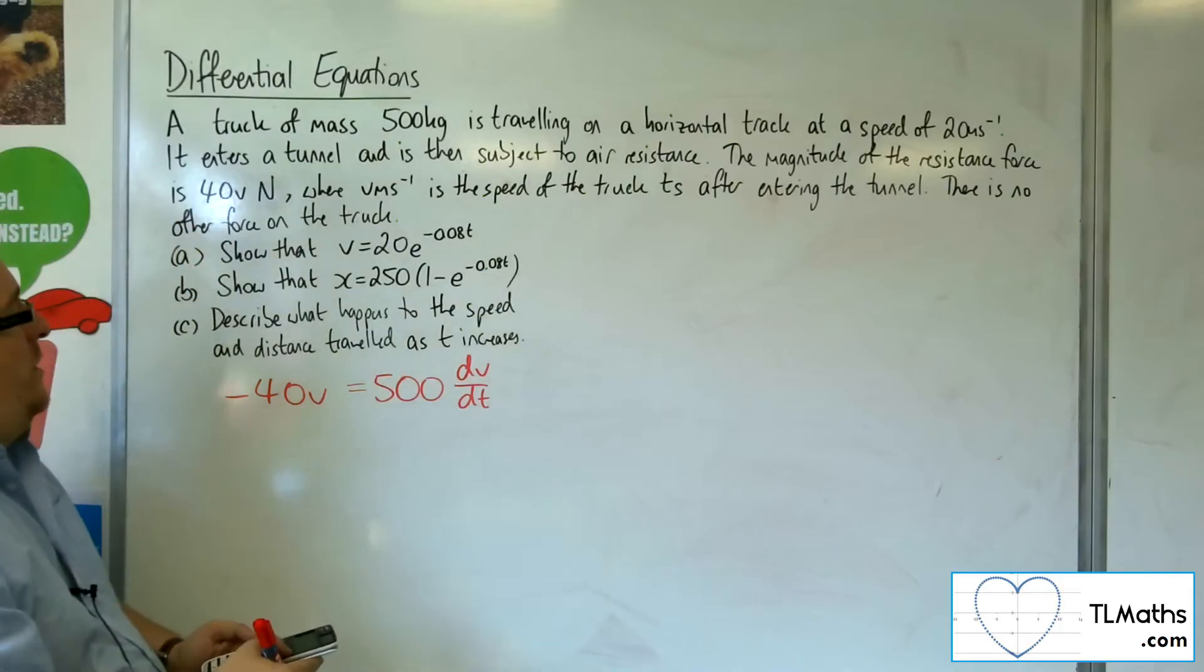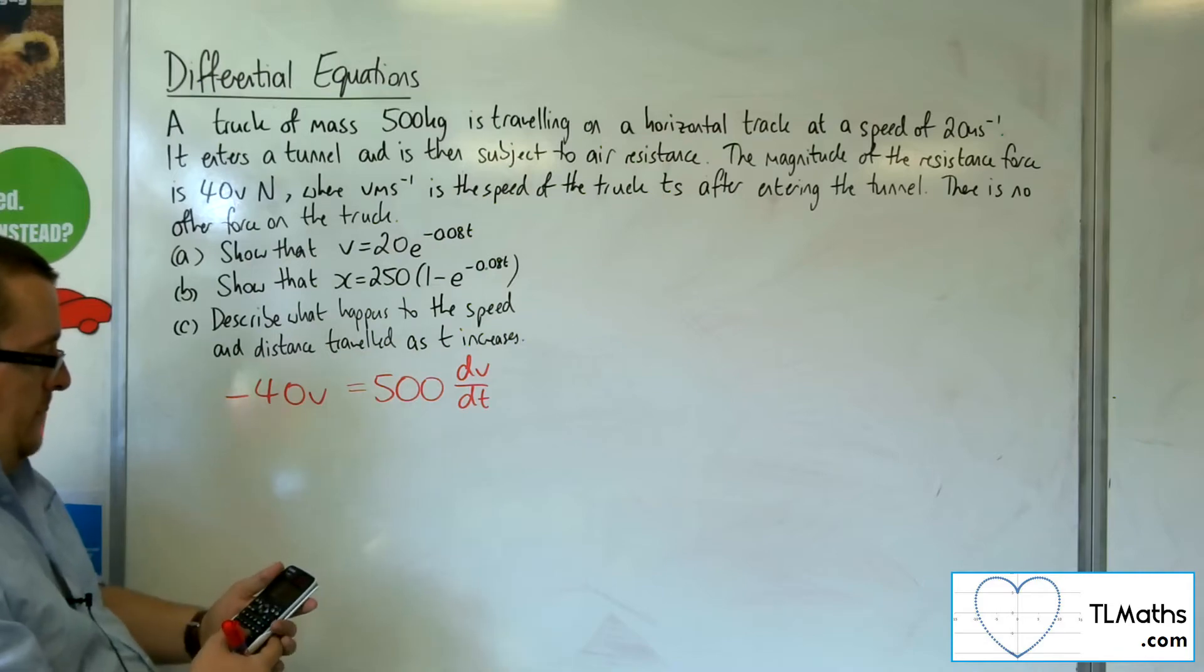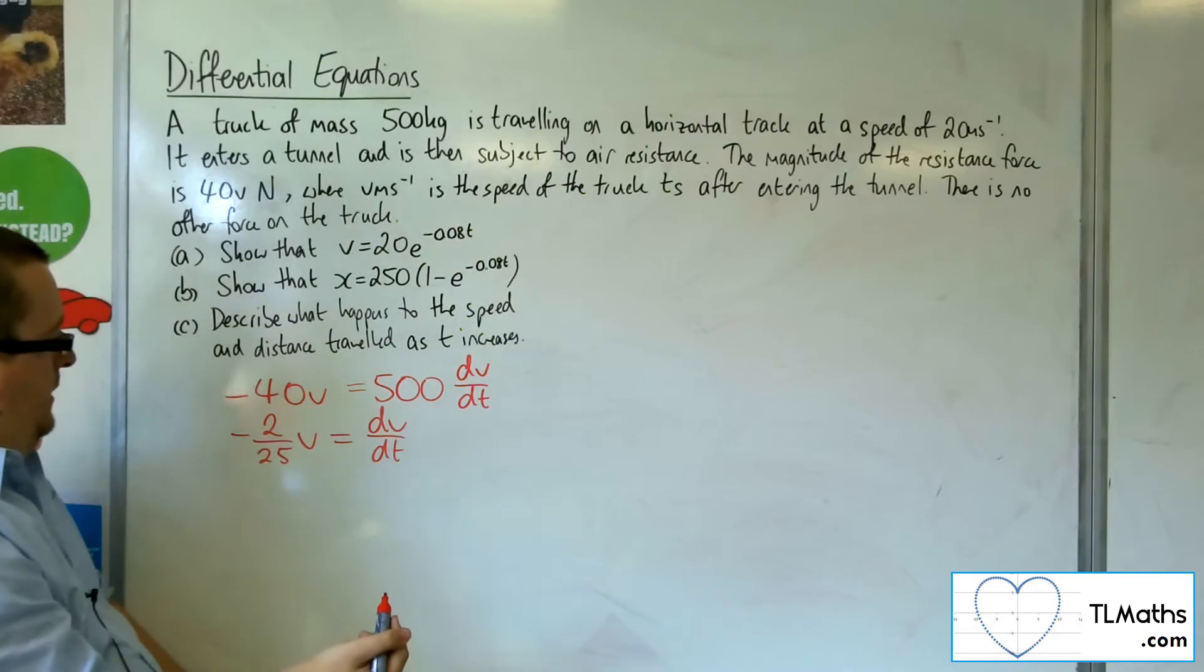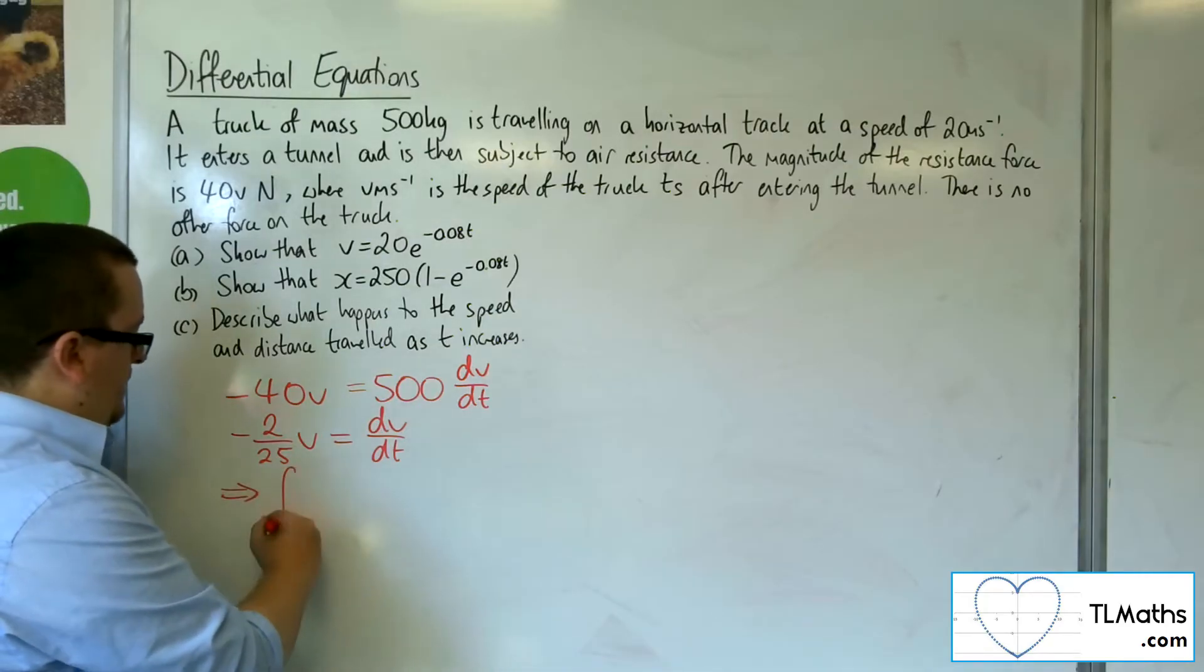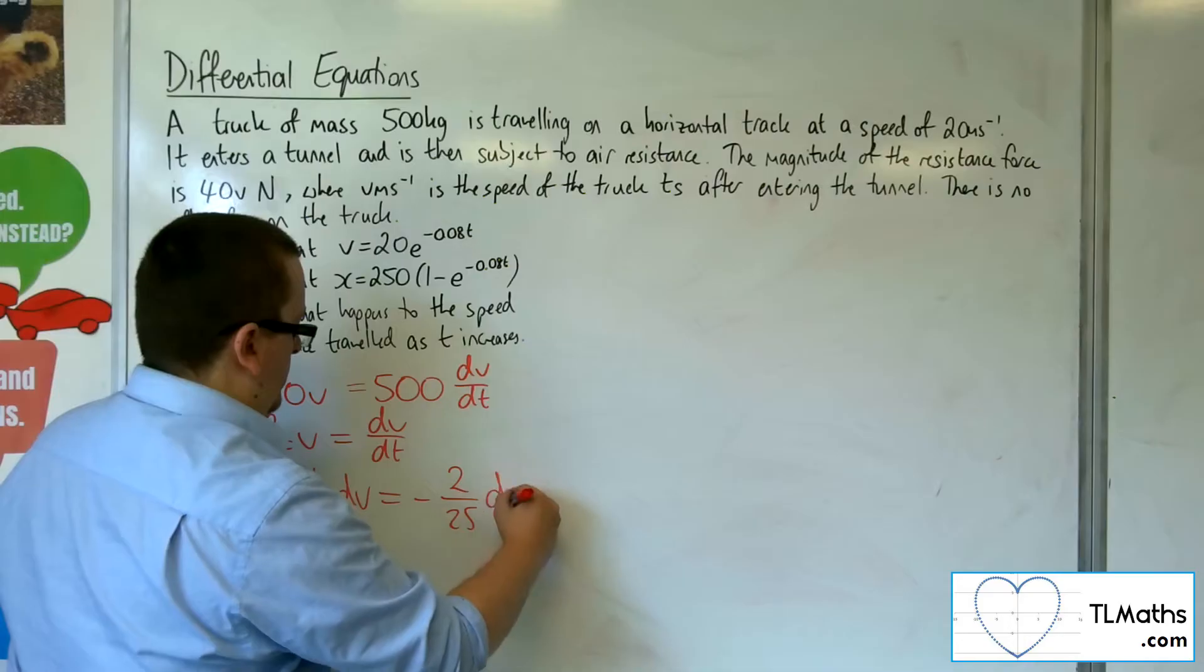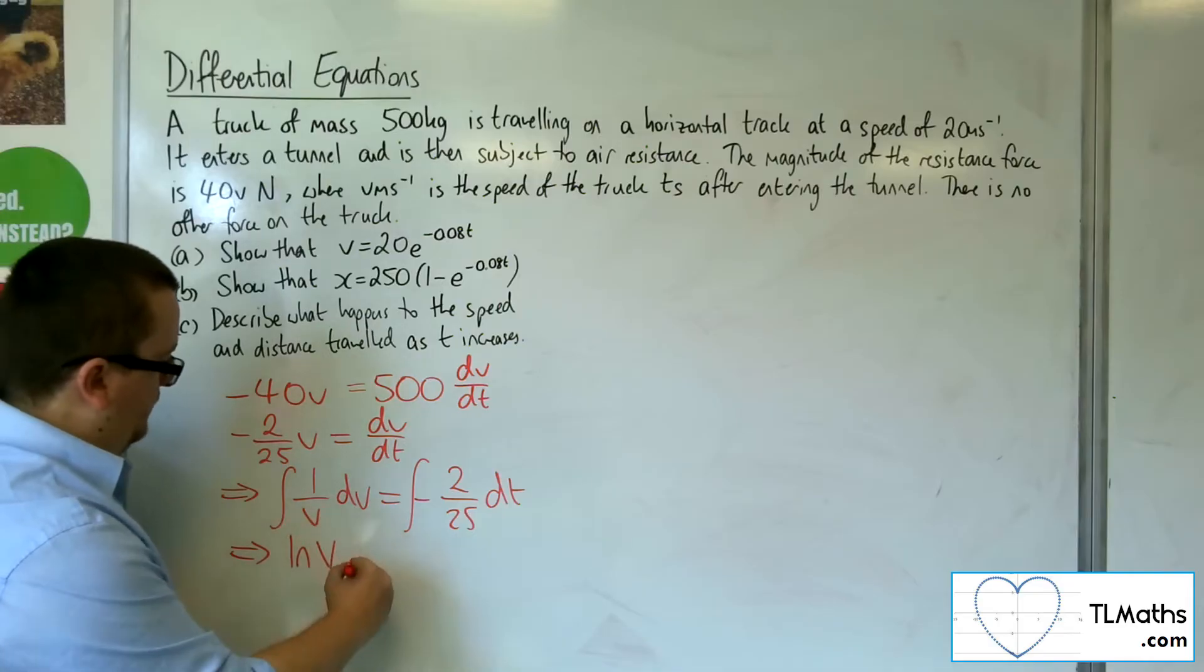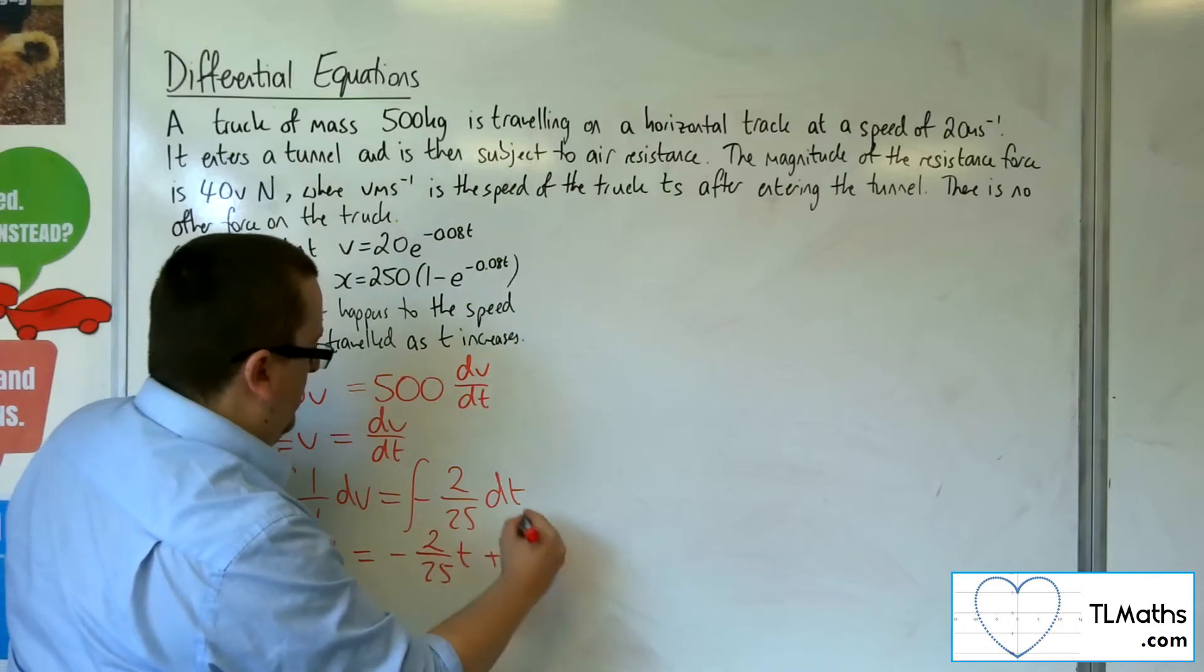Let's make this easier by dividing both sides by 500. So minus 40 divided by 500 is minus 2 over 25 V equals dV by dT. If I divide both sides by V, multiply both sides by dT, I can have 1 over V dV equals minus 2 over 25 dT. And integrating both sides, I get ln V equals minus 2 over 25 T plus some constant C.